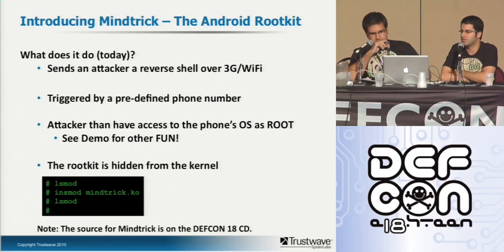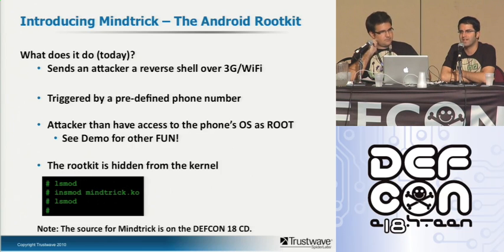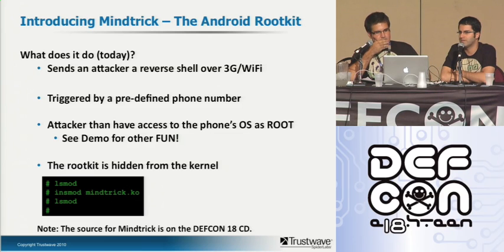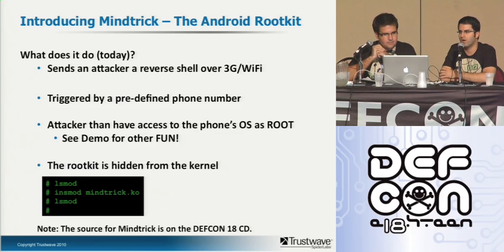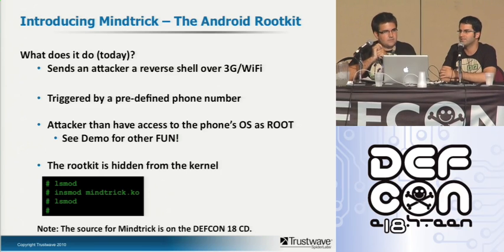Here's the rootkit itself. It's a tool called MindTrick — an Android rootkit. It allows us to send an attacker a reverse shell over 3G or Wi-Fi. Once the rootkit is loaded on a phone, if a phone number is defined before the kernel module is compiled, when it receives a phone call from that specific number, it will open up a reverse shell to an IP address also specified. You can define multiple phone numbers and multiple destinations. It's C code, so you can extend it however you want.